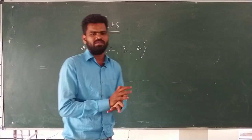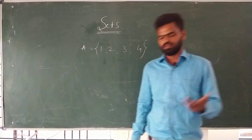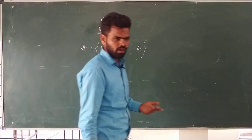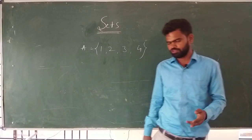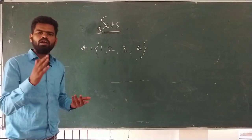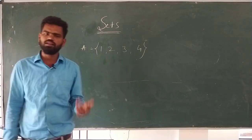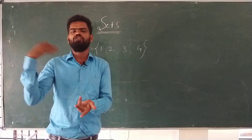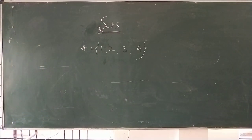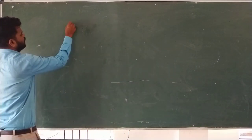An empty set is denoted by the symbol phi or null. Second, a non-empty set is a set having at least one element. Third, a finite set is a set having a finite number of elements. And if a set is not finite — that is, it does not have a finite number of elements — it is called an infinite set.